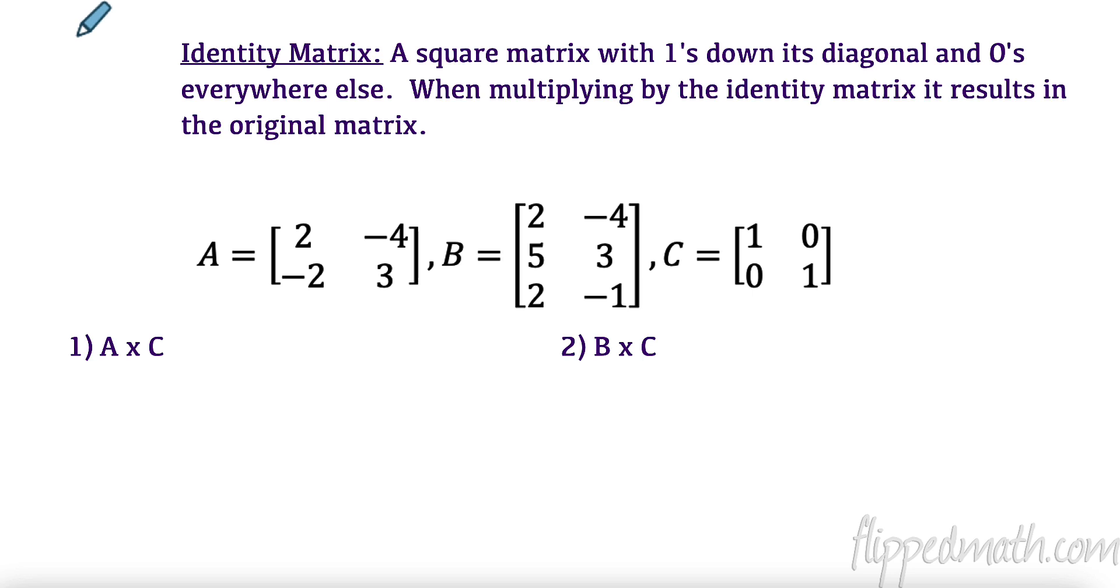So, first thing we want to talk about is the identity matrix. And what is an identity matrix? Well, much like the number one is an identity, because when I multiply something by it, I get the same thing back. An identity matrix is very similar, but it's a square matrix with ones down its diagonals and zeros everywhere else. And when you multiply a matrix by the identity matrix, it results in the original. Let's see what happens when we multiply by an identity matrix.